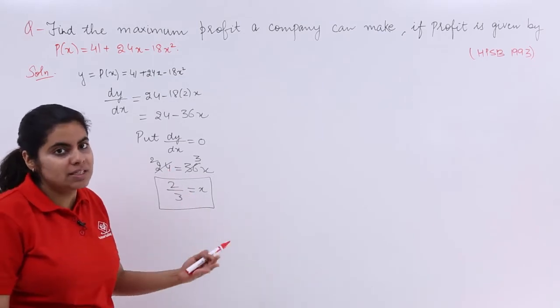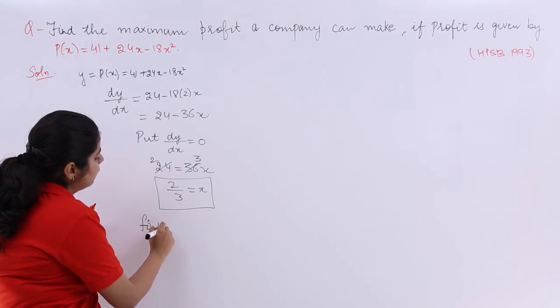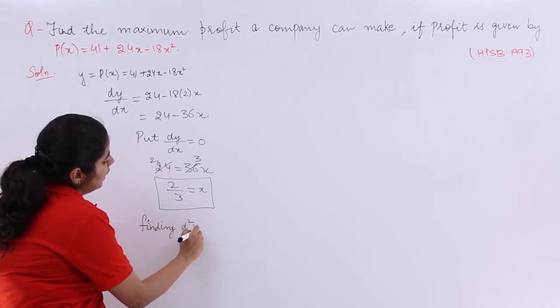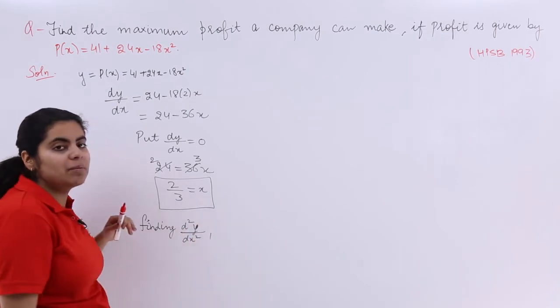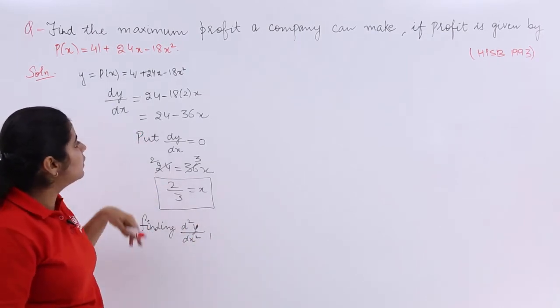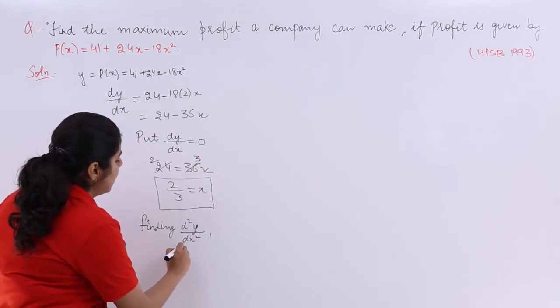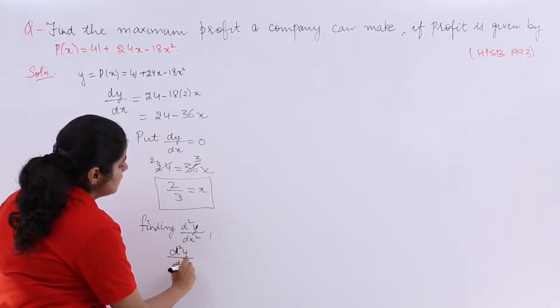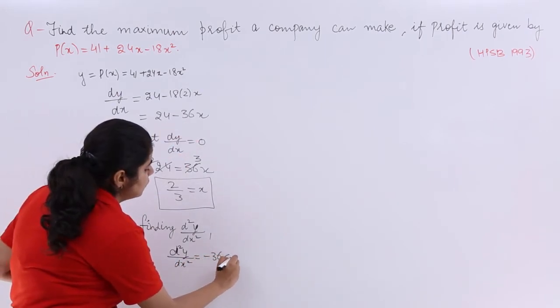For that we need to find out the second order derivative. So finding d²y/dx². What do we have? If dy/dx = 24 - 36x, so definitely my d²y/dx² - 24 is vanishing - it is -36 which is less than 0.